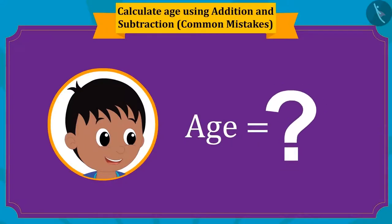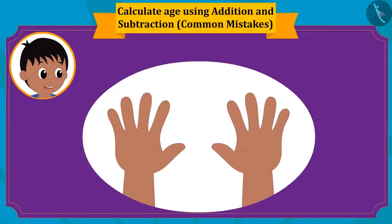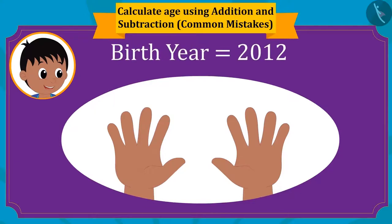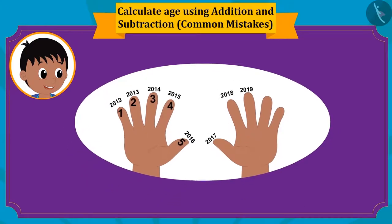Let's see how Raju found his age. Raju counted his age using his fingers. Since he was born in 2012, he started counting from 2012: 2012, 2013, 2014, 2015, 2016, 2017, 2018, and 2019. In this way, Raju counted his age as 8 years old.